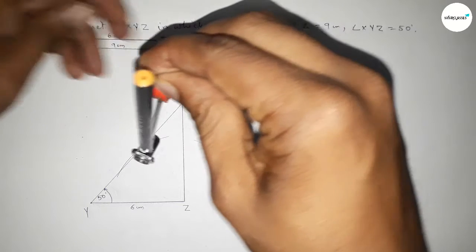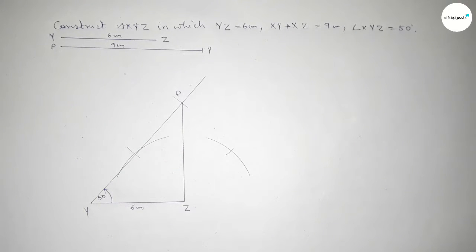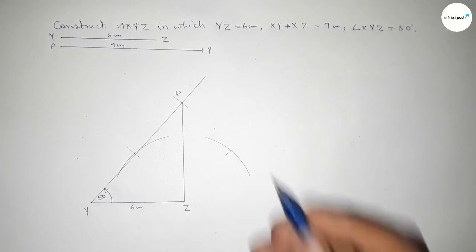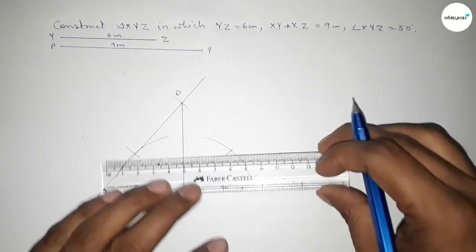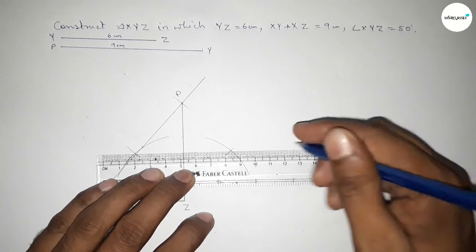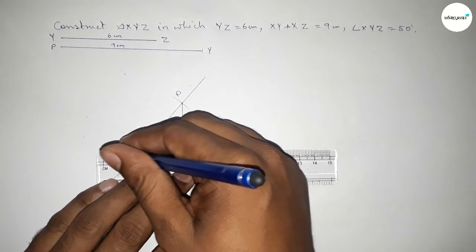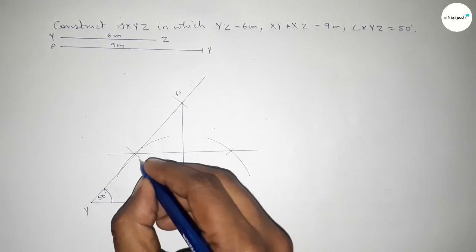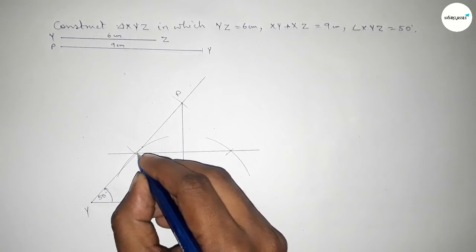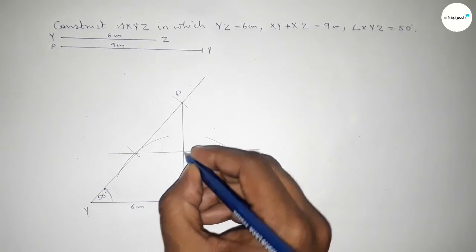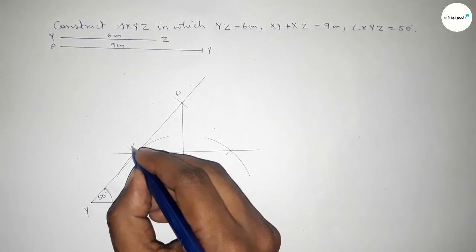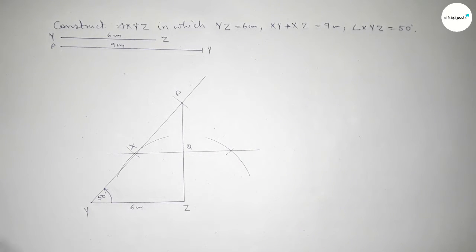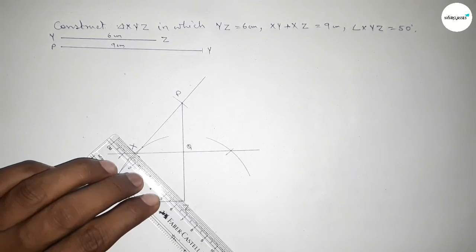Drawing here an arc and drawing here an arc with the same length, and putting the compass here and cutting here. Both the curves intersect at two points. Now joining this bisector of the line PZ.